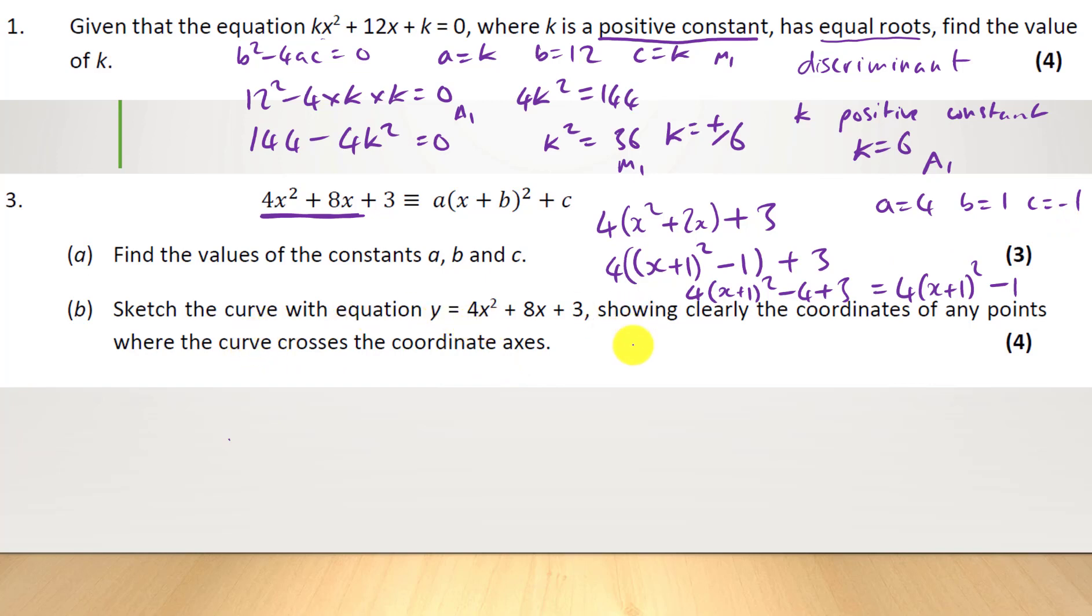Sketch the curve of the equation above, showing clearly the coordinates of any points where the curve crosses the coordinate axes. So let's just draw this. From this, when x equals 0, y equals 3. So that's the y-intercept.